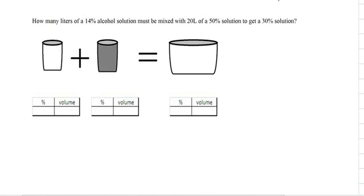Let's try one. How many liters of a 14 percent alcohol solution must be mixed with 20 liters of a 50 percent solution to get a 30 percent solution? Now the problem itself sounds confusing but once you draw pictures, it's really not that bad. It says how many liters of a 14 percent, so we don't know how much of the 14 percent we're mixing and it must be mixed with 20 liters of a 50 percent to obtain a 30 percent.